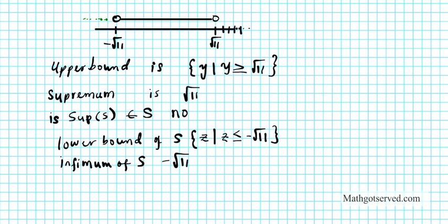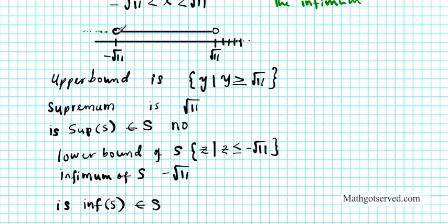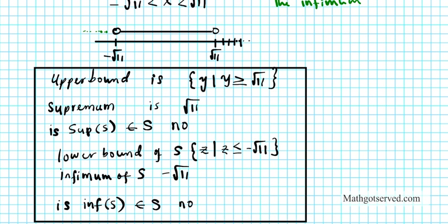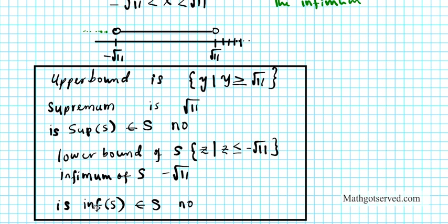The question is: is the infimum of S in S? Looking at the inequality, this is an open circle, which is the infimum. Is it included in the set? The answer is absolutely no, because this is an open circle. If it were closed, then the infimum would be part of S. So there are your answers: upper bound, supremum, and non-inclusion; lower bound, infimum, and non-inclusion.